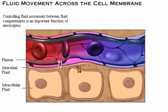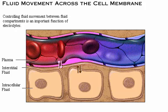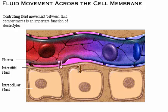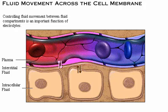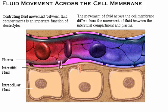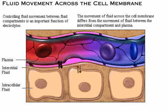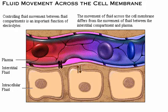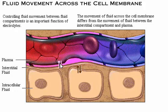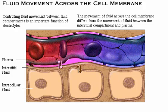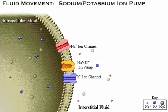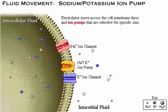One of the important functions of electrolytes, particularly sodium, is to control fluid movement between fluid compartments. The movement of fluid across the cell membrane differs from the movement of fluid between the interstitial compartment and plasma. The cell membrane acts as a barrier to separate intracellular and interstitial fluid compartments.